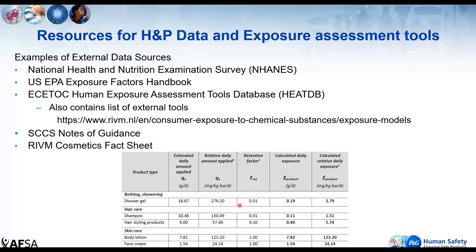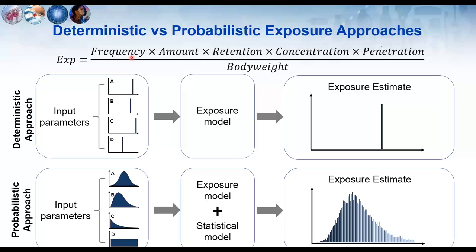Going further into the tiered approach, we have the exposure algorithm, and then there are choices about whether a deterministic or probabilistic approach is used to solve it. The data from the SCCS Notes of Guidance represent a deterministic approach, where point estimates feed into the algorithm. You have a single estimate for frequency, one for amount applied and retention, and solving the equation mathematically gives a single point estimate for exposure.